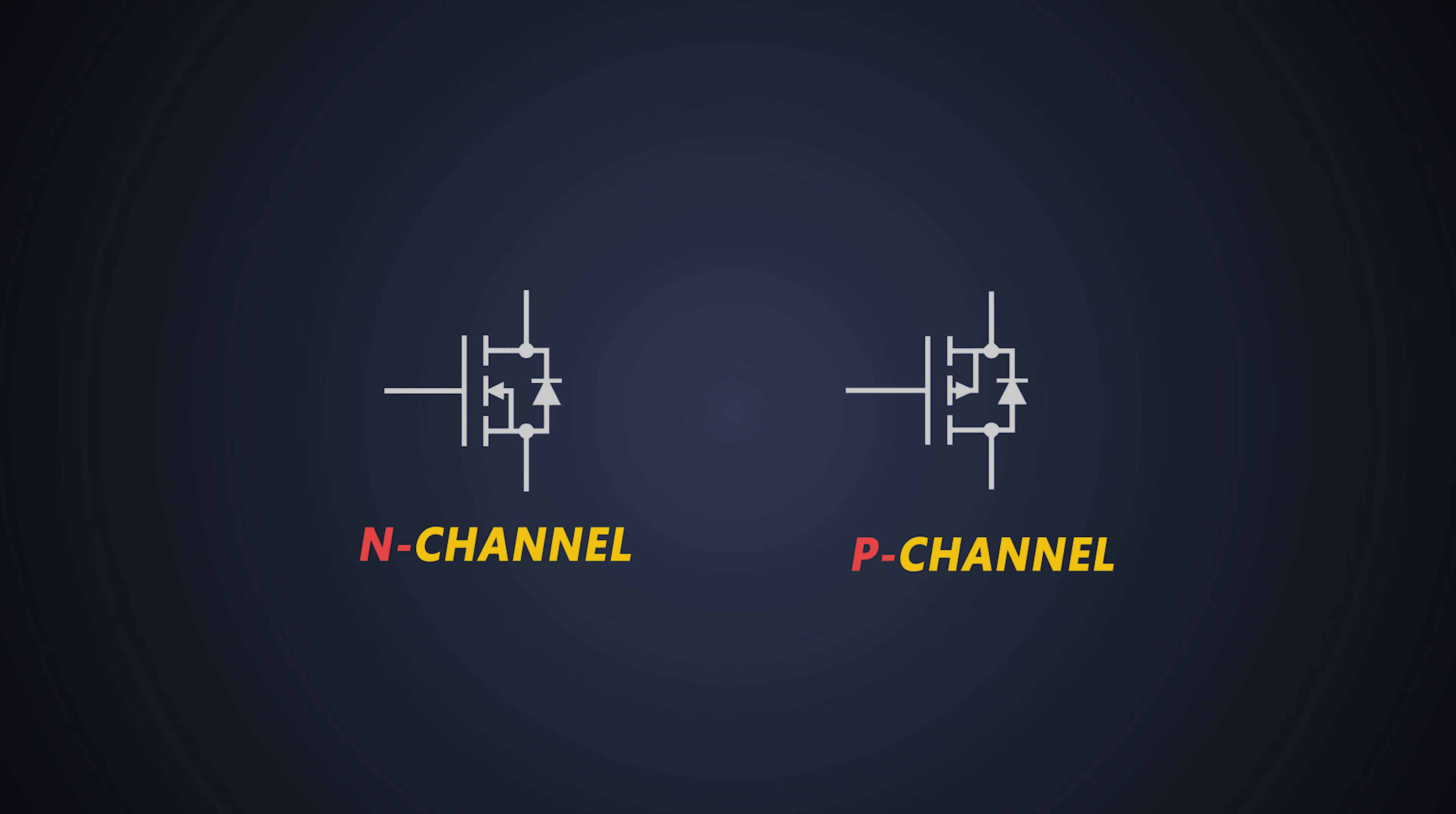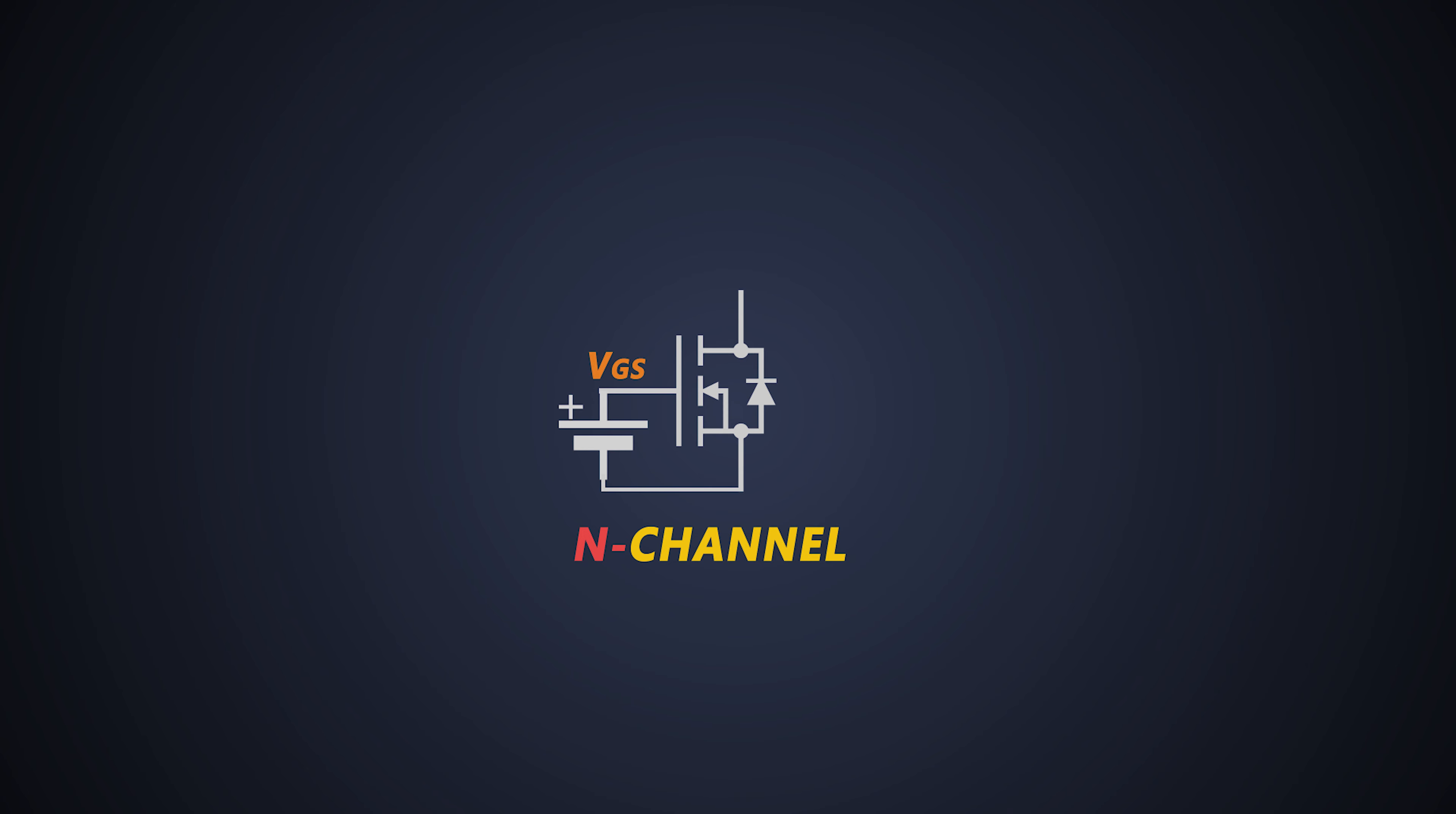We'll use an n-channel MOSFET to control a load in this video. To turn on n-channel MOSFET, we need to provide sufficient gate to source voltage to the MOSFET so that its input capacitor charges. And to turn off a MOSFET, we remove gate to source voltage from the MOSFET and discharge the input capacitor.